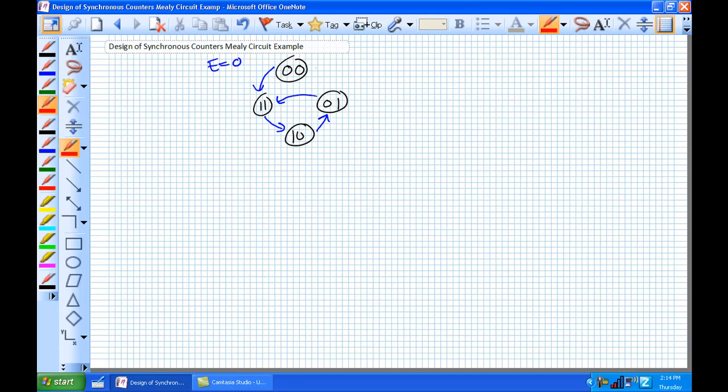However, when external input E equals 1, we go in the following manner. And again, 0, 0 is just a feed-in state to a loop.